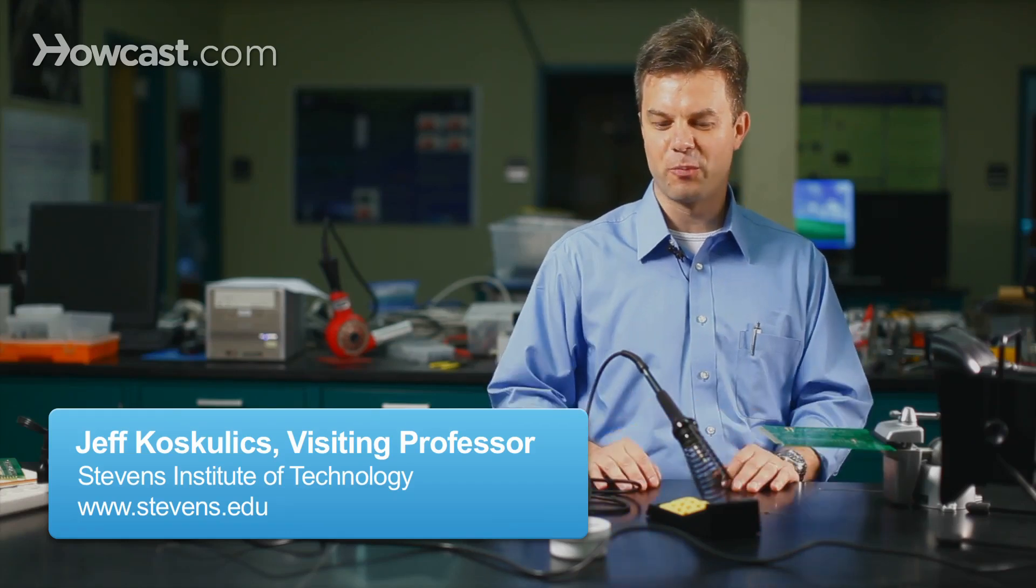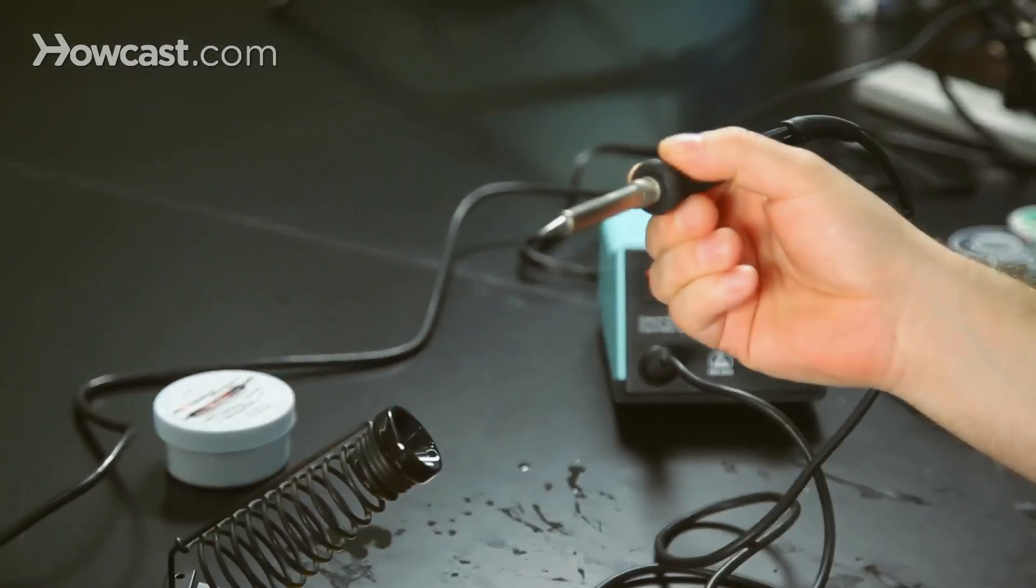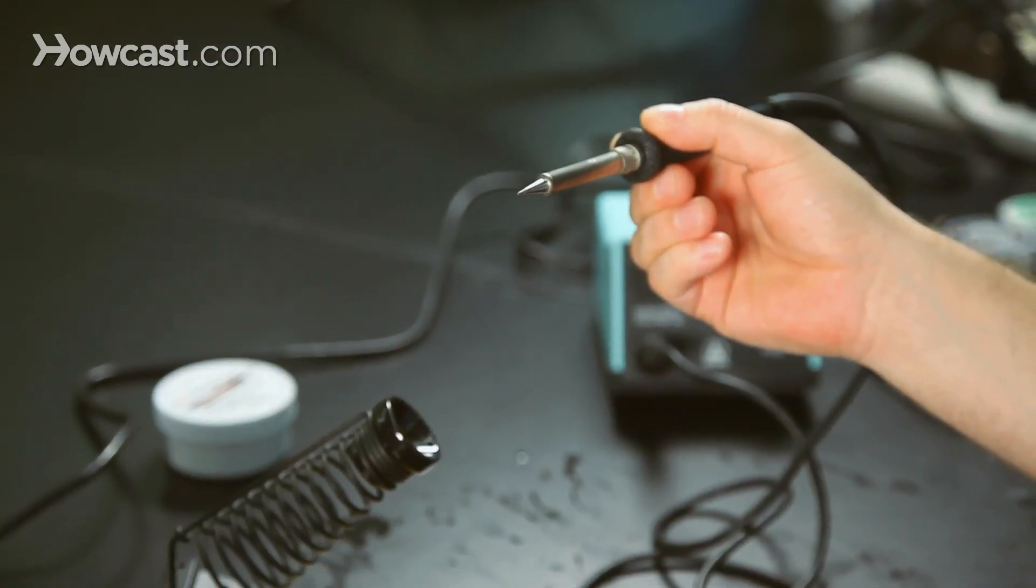The soldering iron has a number of parts that we'll discuss. First is the iron itself, which has a handle that is thermally insulated to allow you to hold it safely without getting a burn.